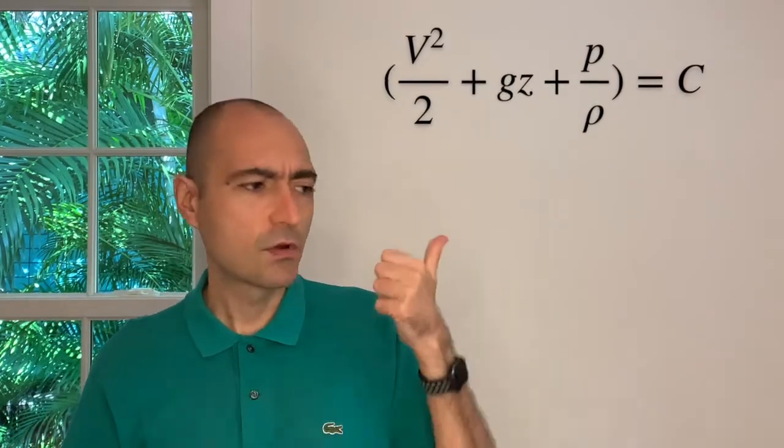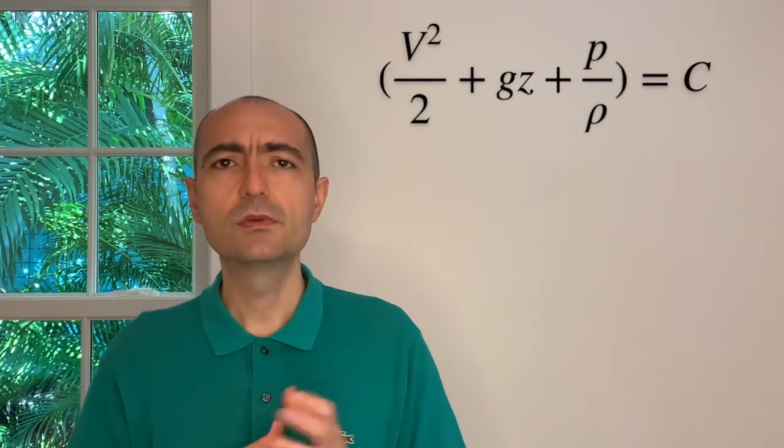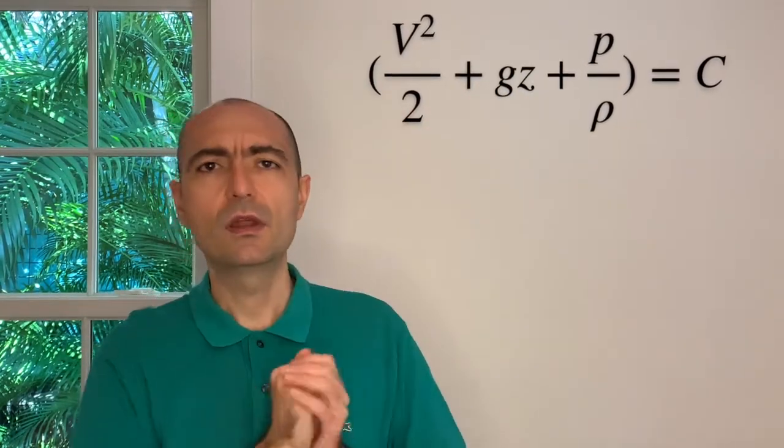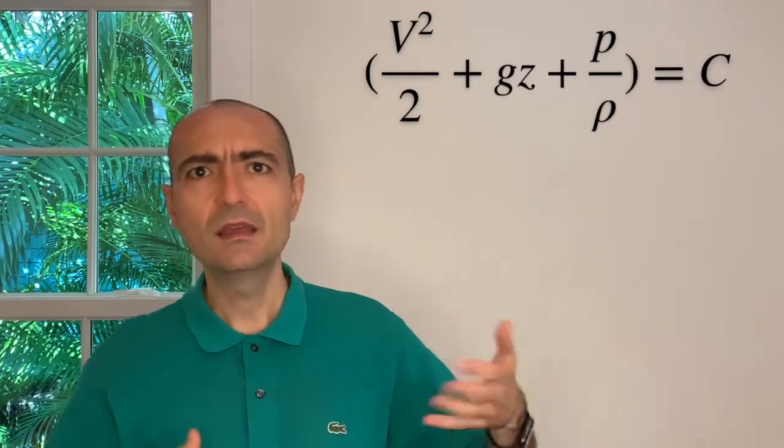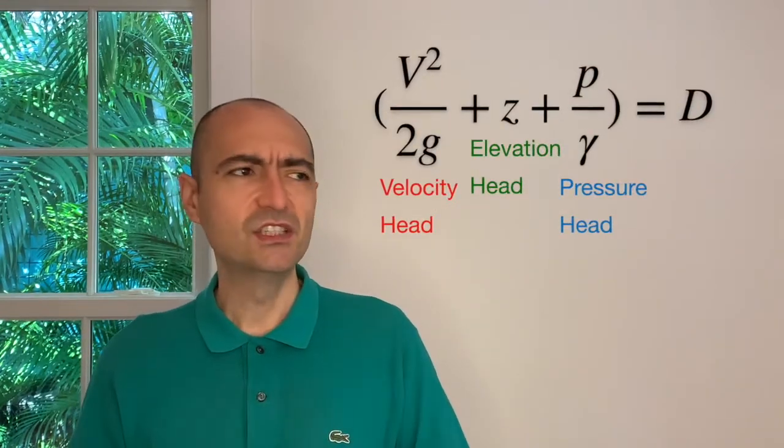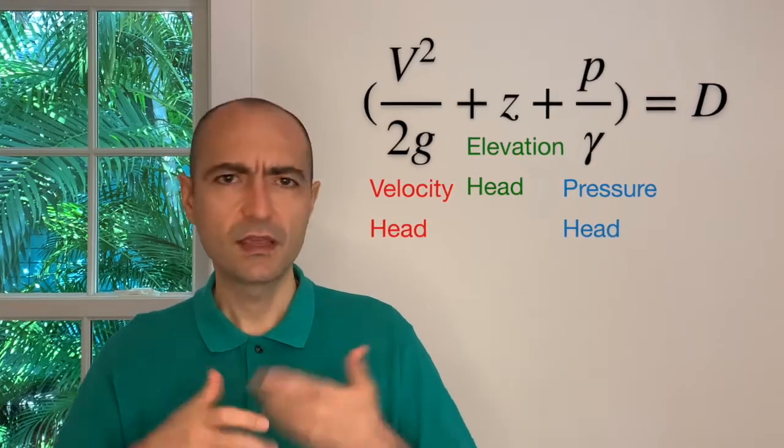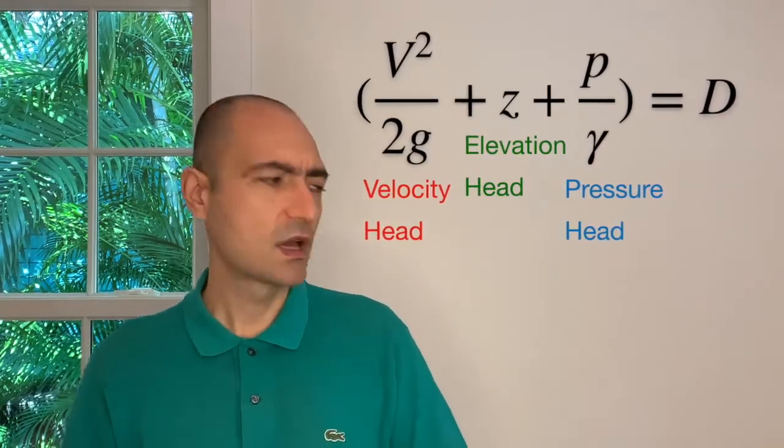And again, this is written on a streamline for two points. And I showed you that, when I write it up there, v squared over 2 plus gz plus p over rho, turns out to be a constant value on one particular streamline. When I go from one streamline to another streamline, obviously that value of constant, which is c, will change. And I also showed you that I can divide both sides by g and obtain pressure head, velocity head, elevation head. Again, summation of those is equal to constant.